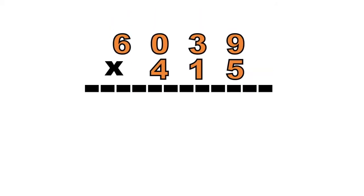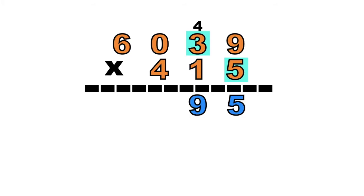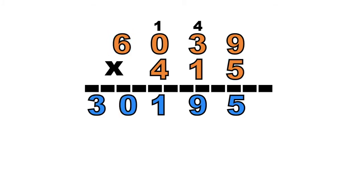How about if we have this? 6,039 times 415. So let's multiply digit 5 on each digit of the first factor. 5 times 9 equals 45. So we're going to write 5 at the bottom, then carry 4. 5 times 3 equals 15 plus 4 equals 19. So write 9 at the bottom, then carry 1. 5 times 0 equals 0 plus 1 equals 1. How about 5 times 6 equals — it's 30. So let's proceed to the second digit of the second factor.